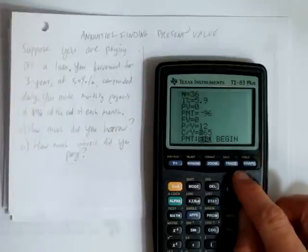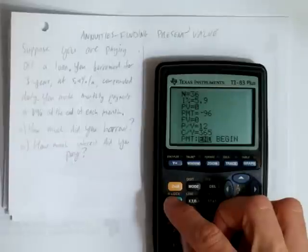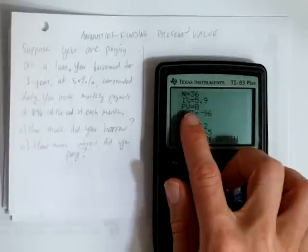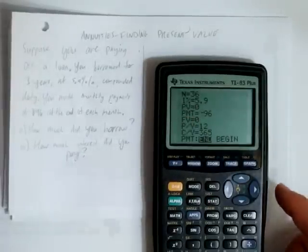So everything's ready, how much did we borrow? We go up to present value, that's the amount of a loan. The loan always shows up in present value, and in this case,